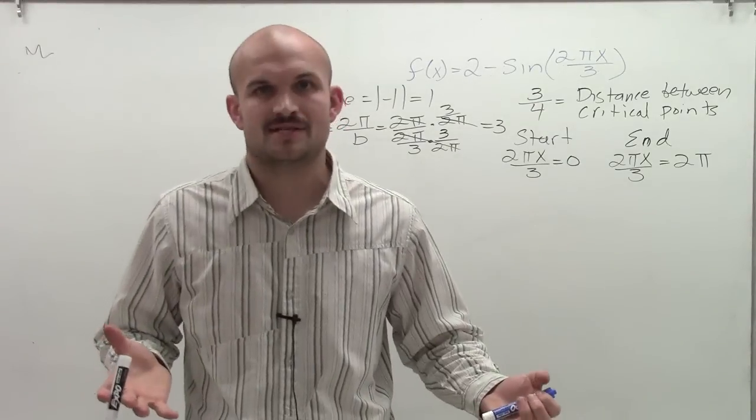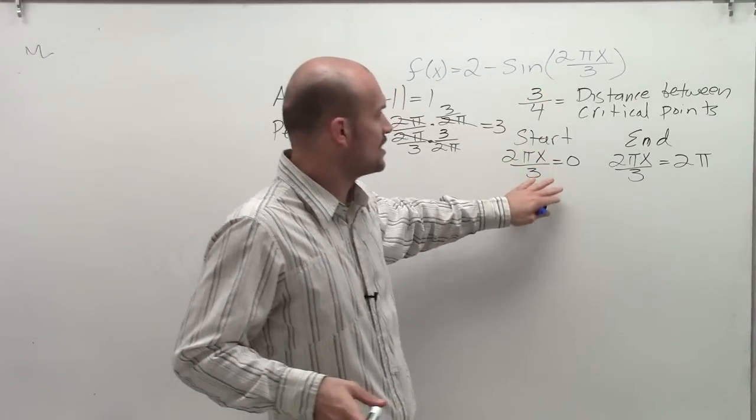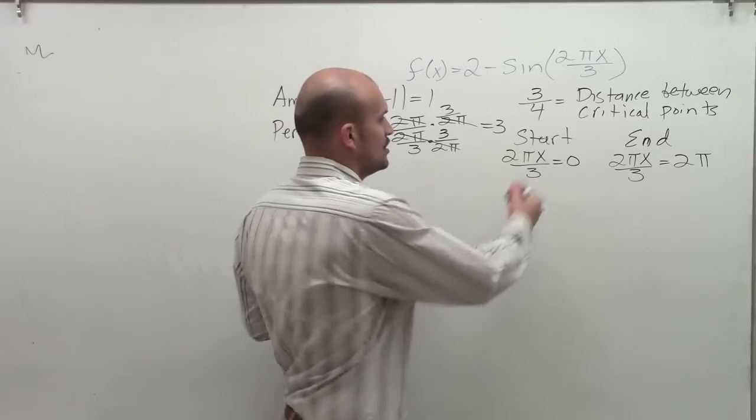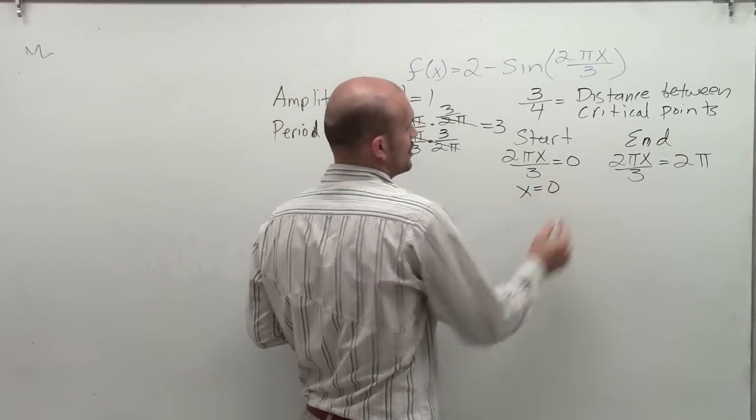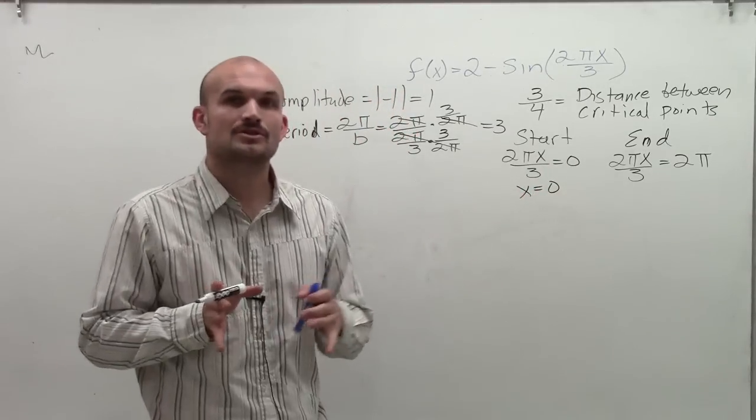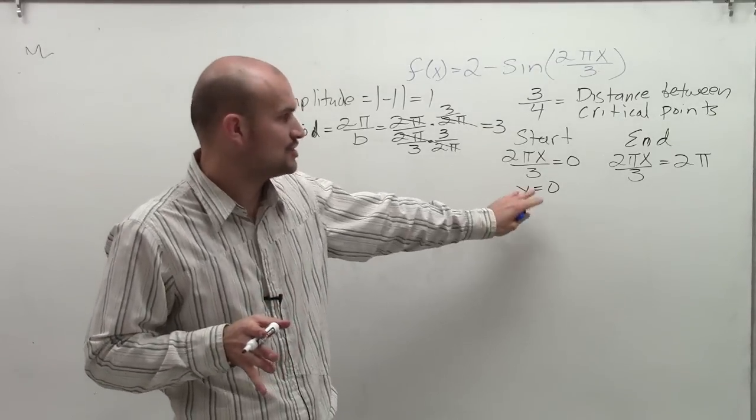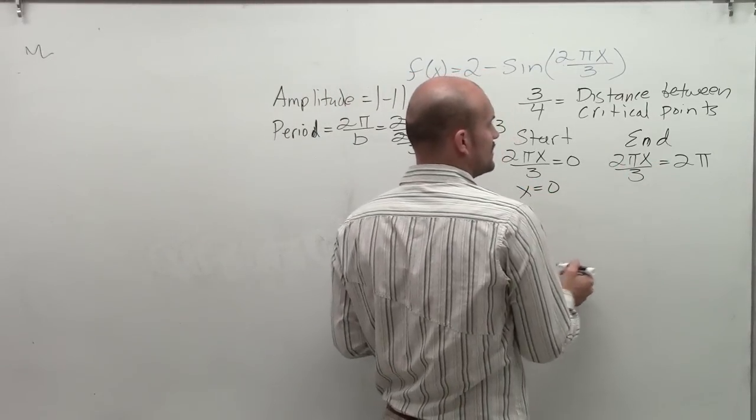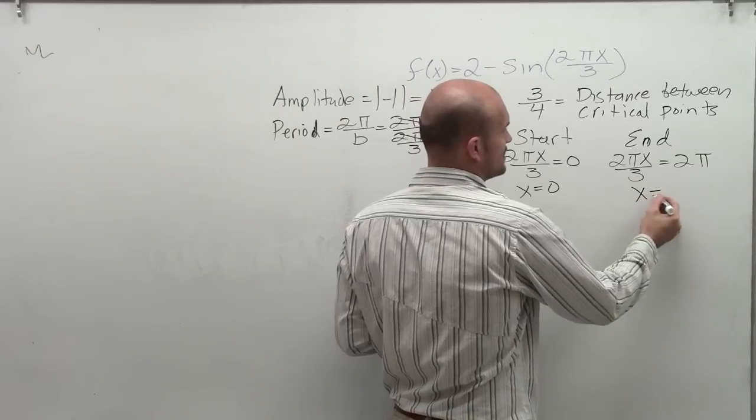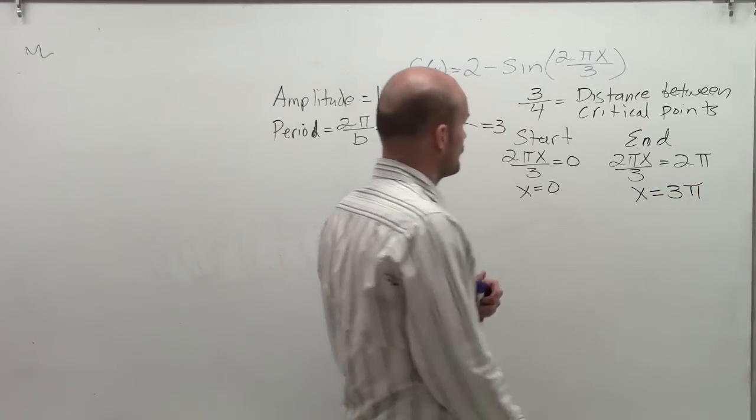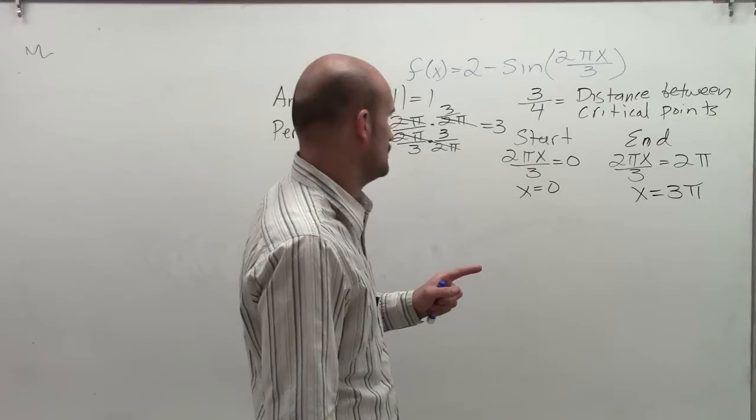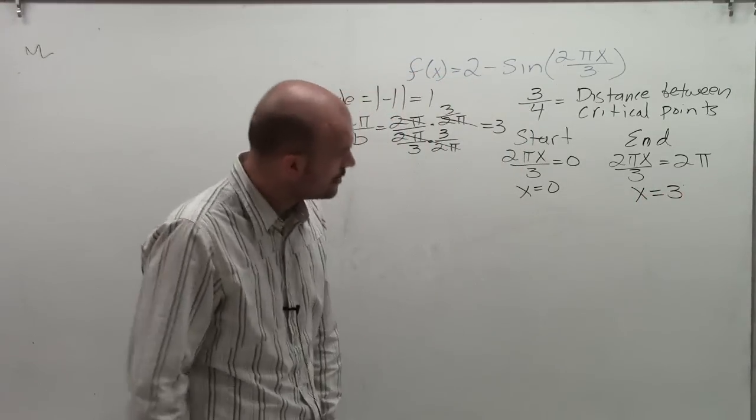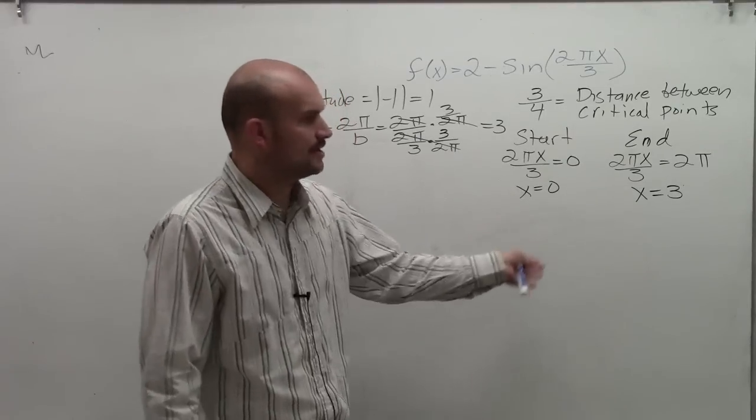So if we're going to make any kind of transformations on there, we want to see what the transformations are inside the function and set them equal to our 0 and 2 pi and see how that's going to change. So by solving for x, I get x is going to equal 0. Meaning my graph is not going to shift here, but it's still going to cross at 0. Then, by solving for here, I end up getting x equals 3. So I get x equals 0 and x equals 3.